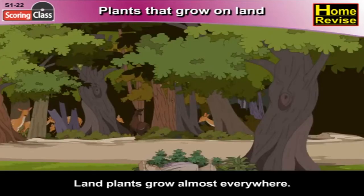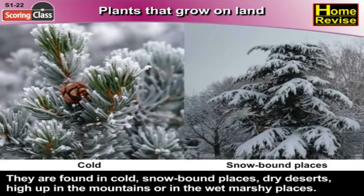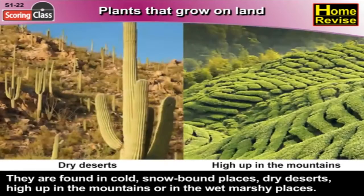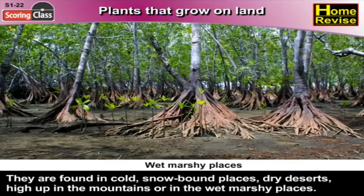Plants that grow on land grow almost everywhere. They are found in cold snowbound places, dry deserts, high up in the mountains, or in wet marshy places. Plants are found growing all over — I'm sure you have seen many plants.